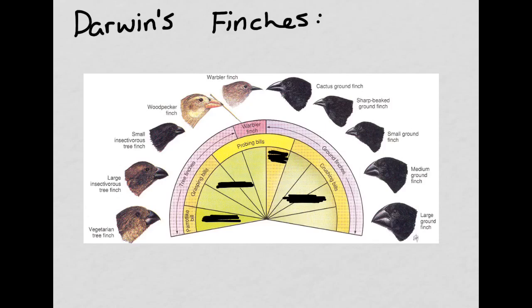Take an educated guess as to what each type of bird might be eating based on the shape of their bill and where they might be living. Some eat cacti, some eat seeds, some eat insects, and some eat fruits. Things eating large seeds have a very large crushing bill; something eating cactus fruit needs a thin bill to dig between the needles; and something eating insects has something in between a crushing and a probing bill. That's pretty much an overview of evolution in the Galapagos — bring your questions to class.